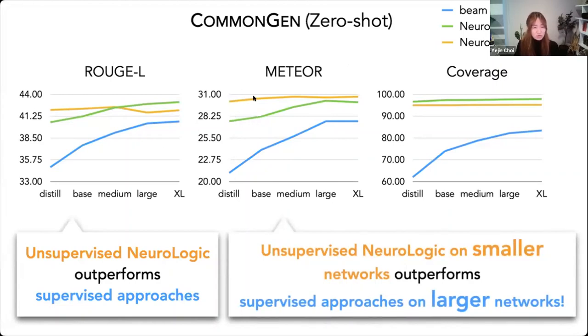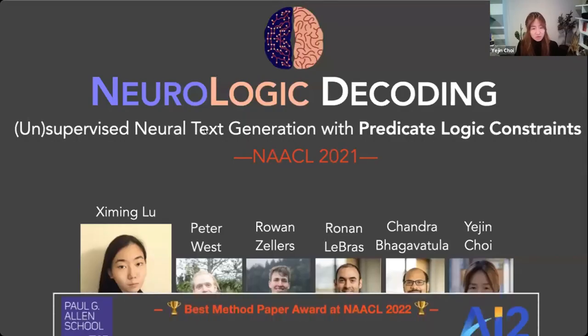But what's interesting is that the unsupervised neurologic can outperform supervised blue line. Unsupervised neurologic can outperform supervised, but also unsupervised neurologic on smaller network can outperform supervised approaches on larger networks. So unsupervised models on smaller network starts so strong right off the bat to the point that it's actually doing better than supervised model that is using conventional beam search. So this is one strong takeaway message here is that, well, everybody talks about how, you know, they're going to invest more and more into larger models. But if we spend just a fraction of that effort into inference time algorithm, well, you can get dramatic performance boost as well.